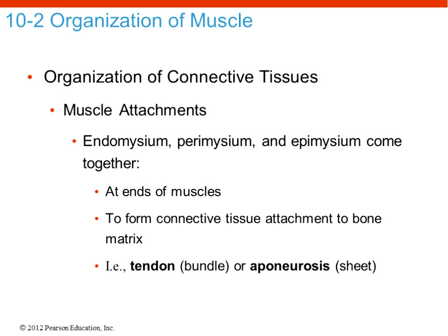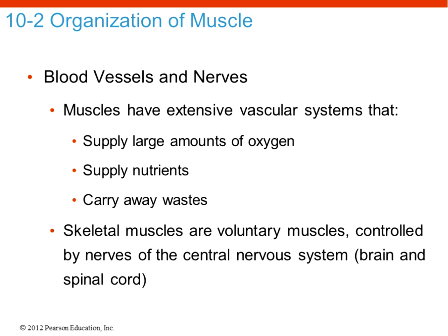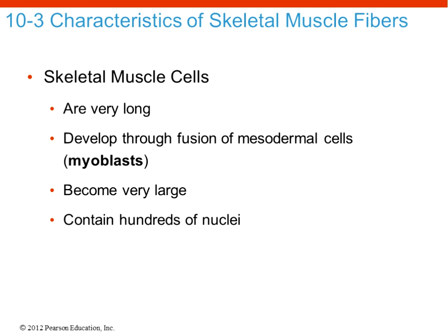The endomysium, perimysium, and epimysium compartmentalize the muscle tissue but also come together at the ends to form the attachment to bone as a tendon or aponeurosis. Muscles have extensive vascular systems supplying large amounts of oxygen and nutrients and carrying away waste products. Skeletal muscles are voluntary and need nervous impulses from the spinal cord to contract, so the nervous system plays a central role in muscle contraction.